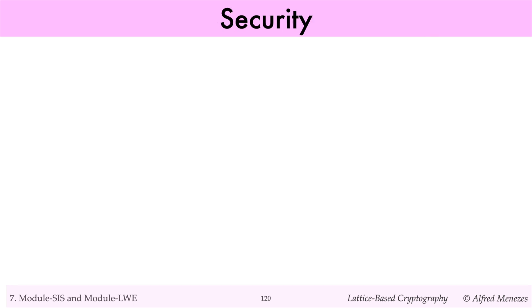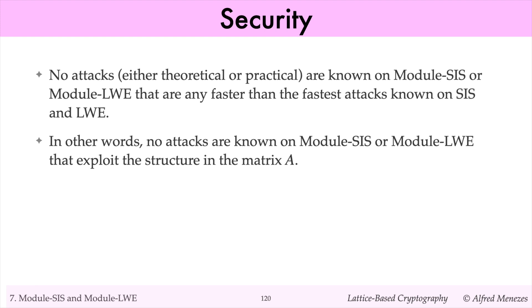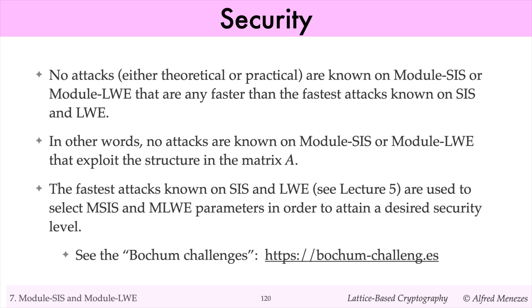Finally, a note on security. No attacks are known on Module SIS or Module LWE that are any faster than the fastest attacks known on the general versions of the problems, namely SIS and LWE. In other words, no attacks are known on Module SIS or Module LWE that exploit the structure in the matrix A. Recall that the matrix A is comprised of blocks of anti-circulant matrices. Thus, the fastest attacks known on SIS and LWE are used to select Module SIS and Module LWE parameters in order to attain a desired security level.